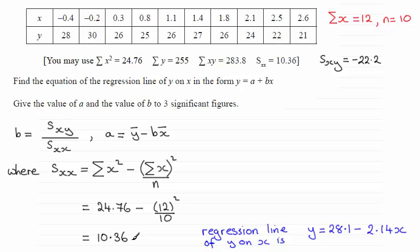So we just need to substitute this value and sxy into here to get b. And if you do that, you'll end up with b equaling minus 2.1428 and so on.